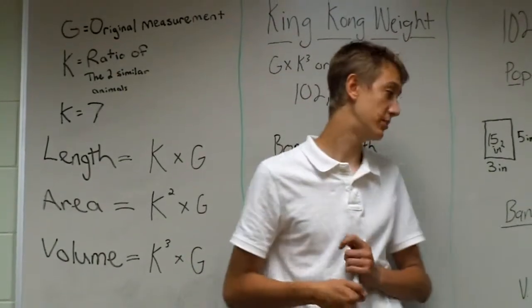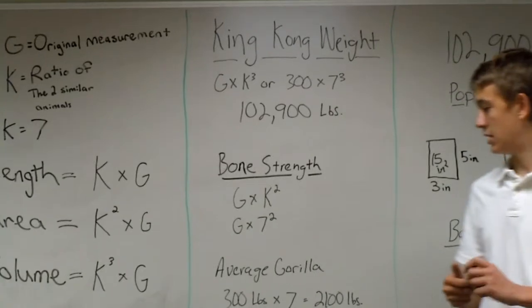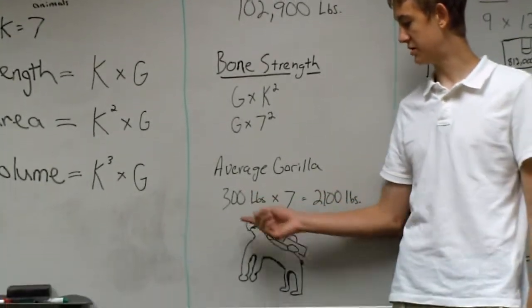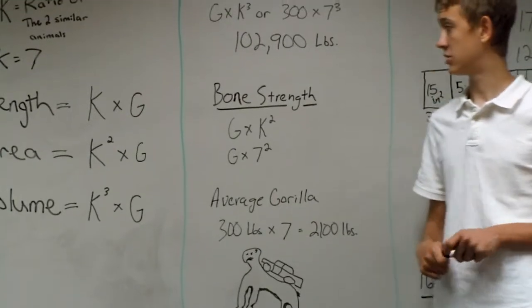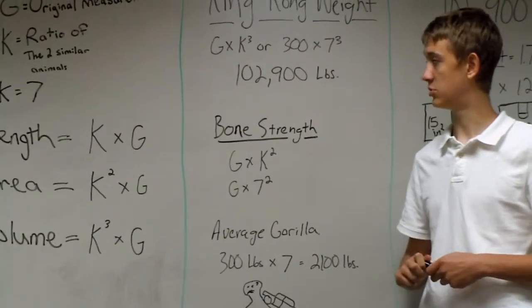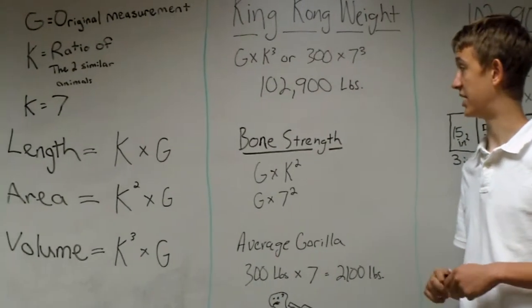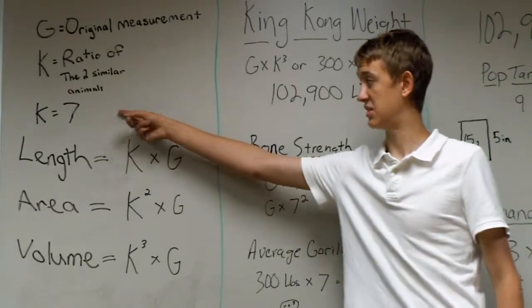Now let's talk about that beast. An average gorilla weighs about 300 pounds and is about three and a half feet tall when he is on all fours. According to measurements in the original movie, King Kong is seven times that. That made the K value seven.